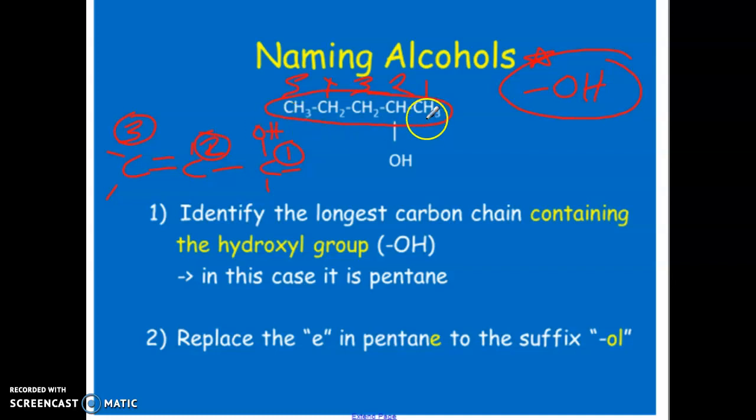You start counting closest to where the OH group is. And of course, we would have to have a number for where that OH group is. And the suffix changes - instead of having pentane in this case with the five, it would be pentanol.